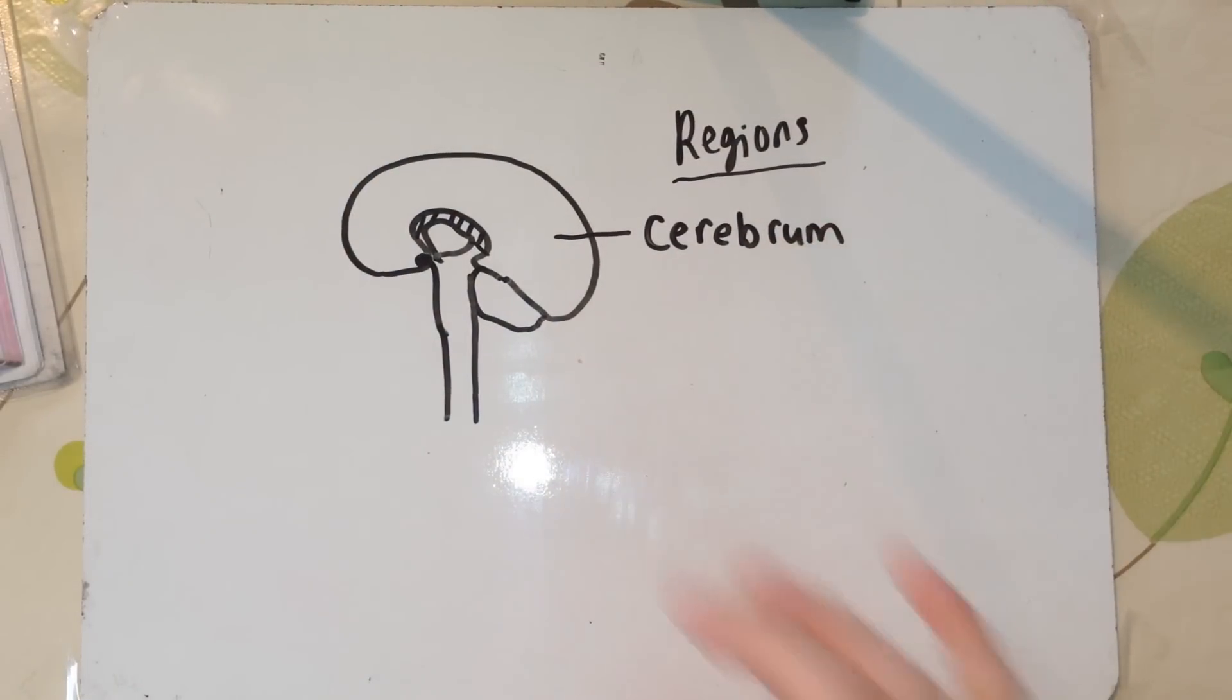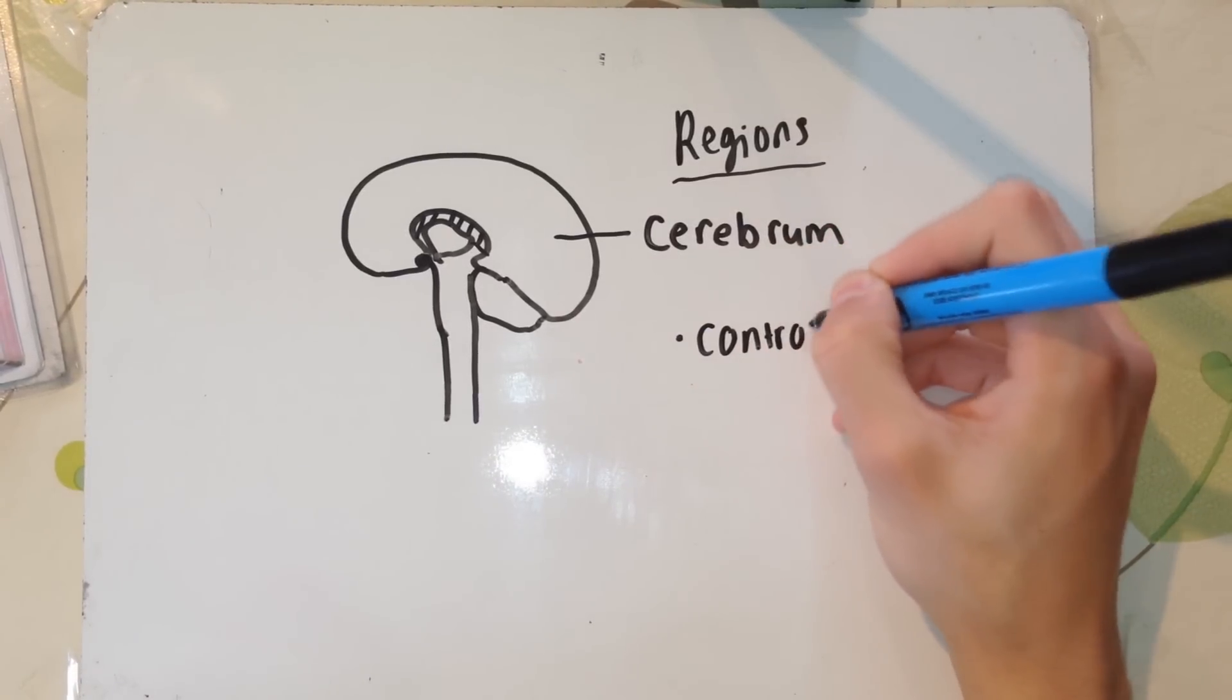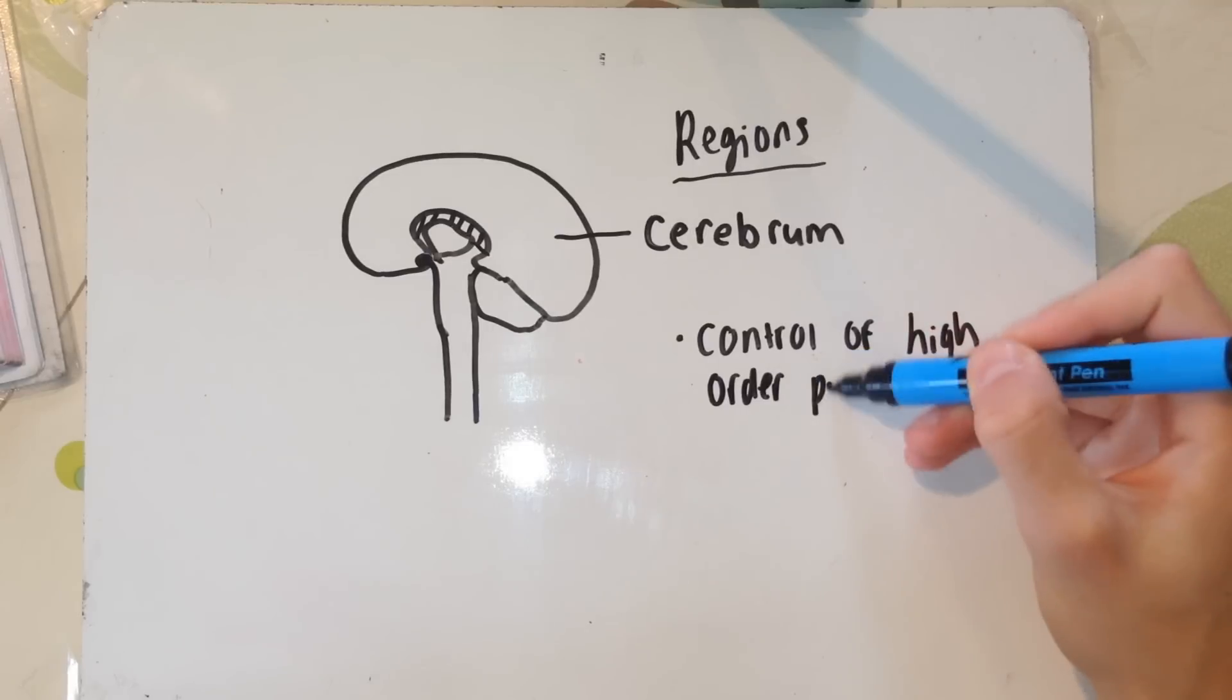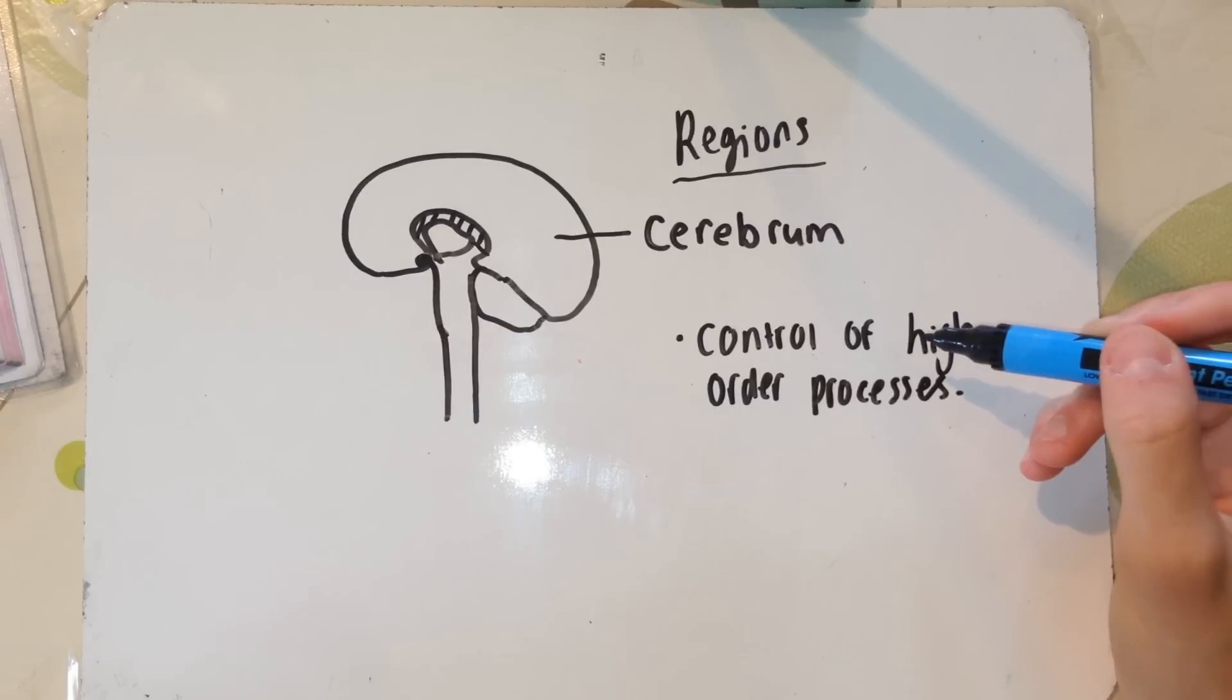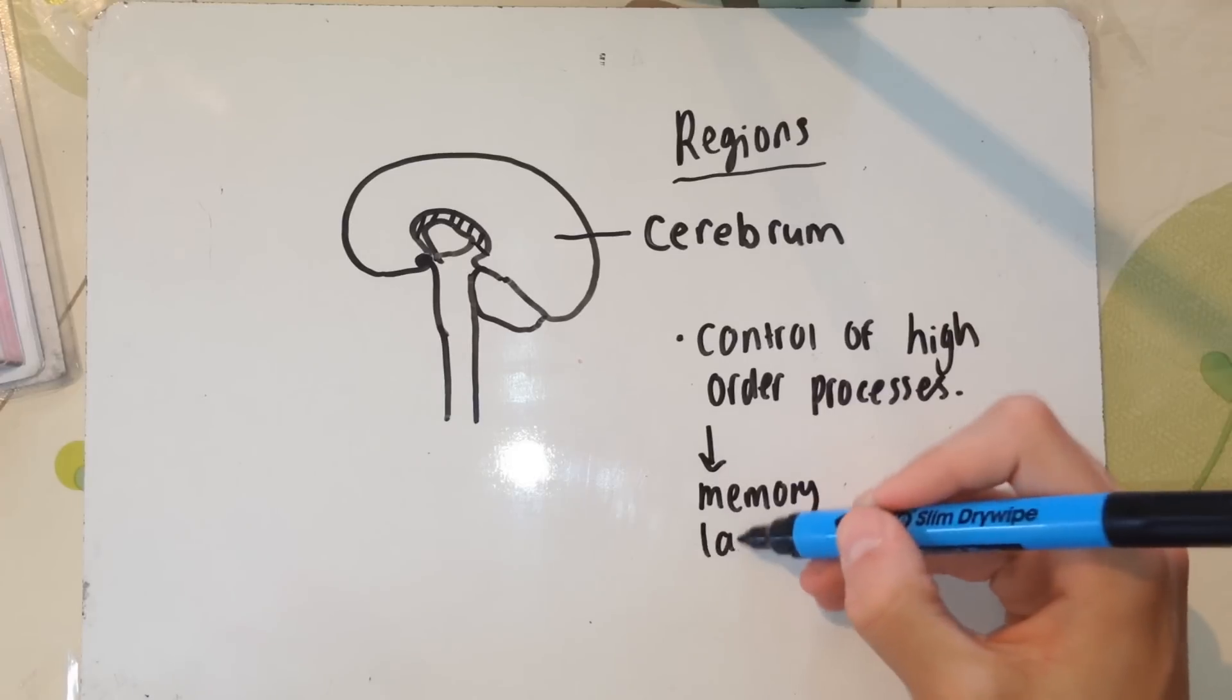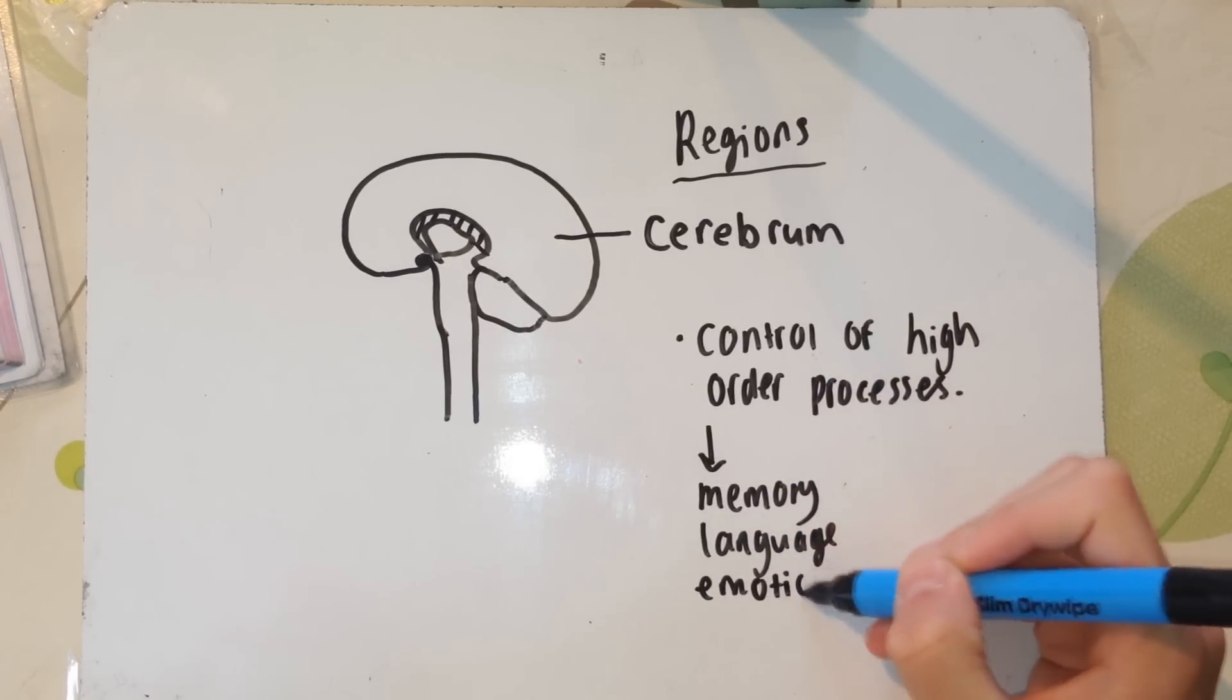So essentially, the function of the cerebrum is control of the higher order processes, such as memory, language, deciding what to do, decision making, maths, all things like that. That's why it is the largest part. Us, as humans, as a species, we have such a large cerebrum. That's why we're so complex, and I suppose that's why we're the most dominant species on the planet today, because we can think things through and work together to solve tasks.